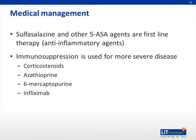Let's move on to management considerations with ulcerative colitis. The first-line therapies are anti-inflammatory agents, including sulfasalazine and other 5-ASA agents. Immunosuppressive medications are employed for more severe disease, including corticosteroids, azathioprine, 6-mercaptopurine, and infliximab.